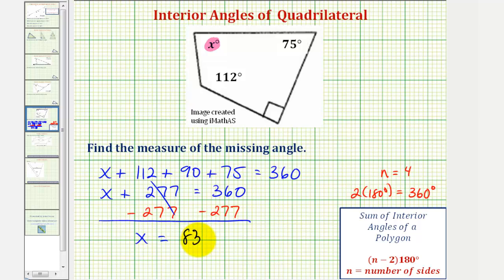So X equals 83, and therefore the measure of the missing angle is 83 degrees. I hope you found this helpful.